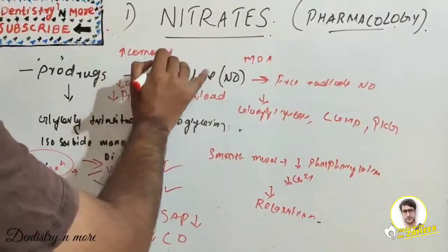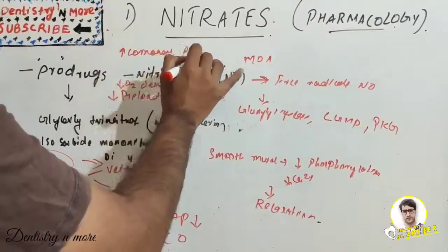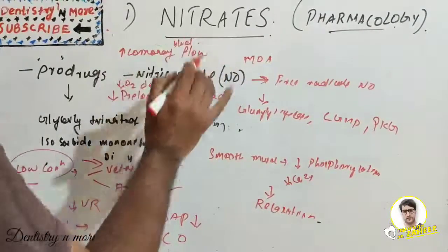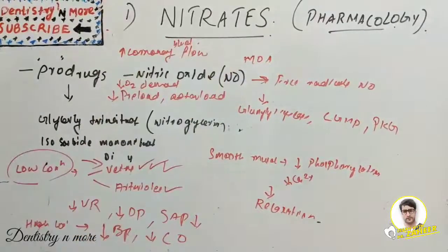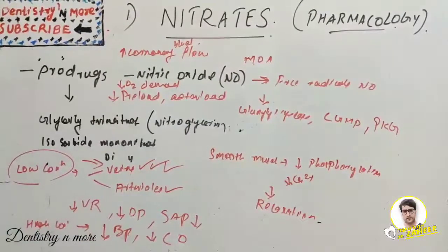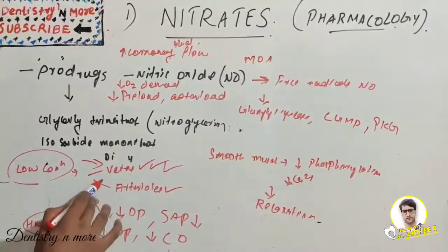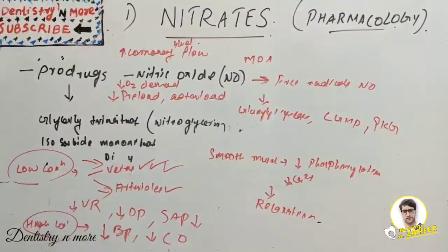It increases coronary blood flow - that is the most striking feature of nitroglycerin. So that was the effect of low concentration and high concentration. High concentration also has effects on arterioles; ultimately it reduces blood pressure and cardiac output.